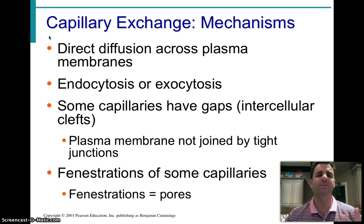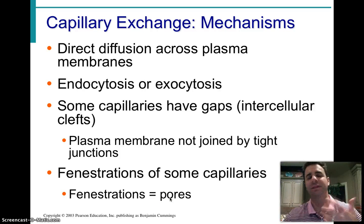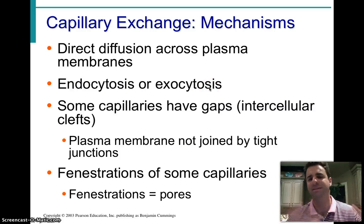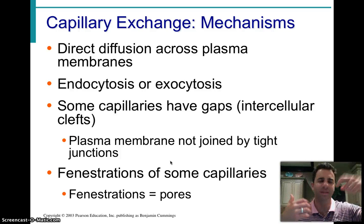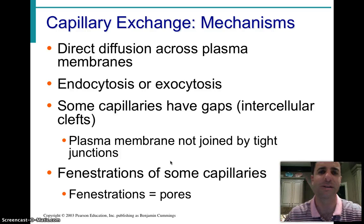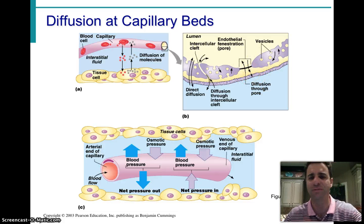For the most part, we have direct diffusion across the plasma membrane, tied to fenestrations — these small micropores in the plasma membrane that enable gases to pass through. Occasionally also through endocytosis or exocytosis, but this is far more minor compared to the fenestrations or the gaps that capillaries have, because they're not held tightly by tight junctions. There's space between the cells and within the membranes themselves. This is all driven by pressure gradients or pressure differences.